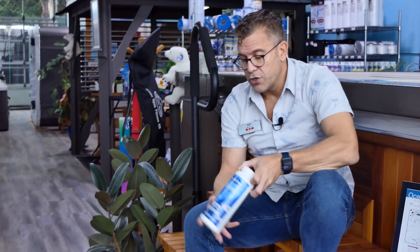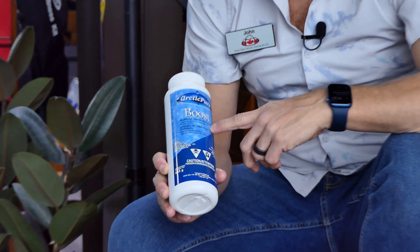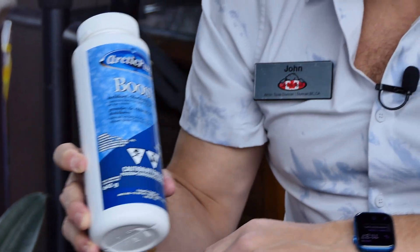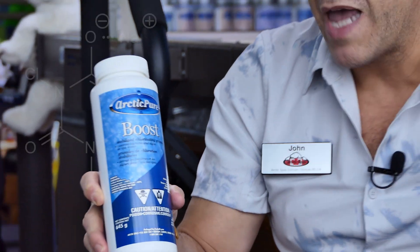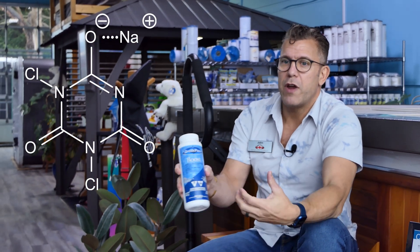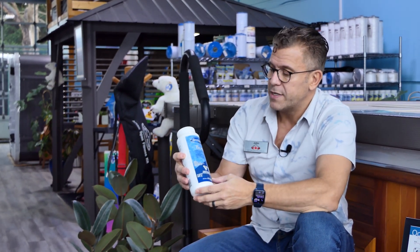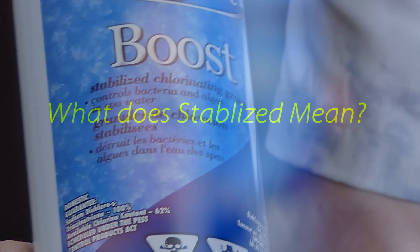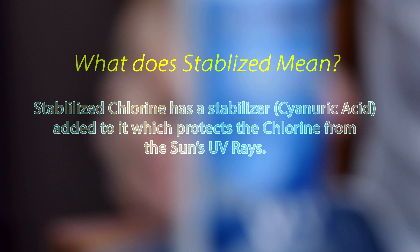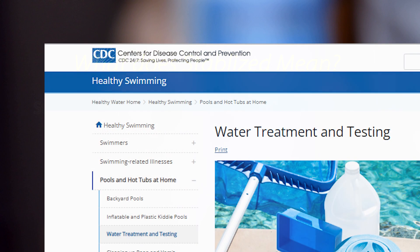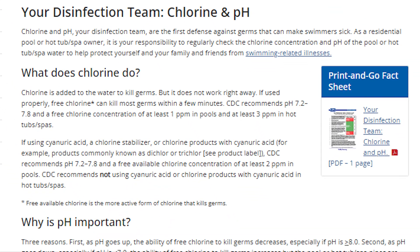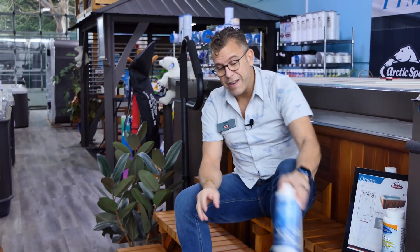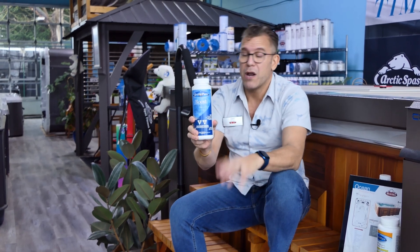The most common granular form of chlorine is sodium dichlor. Sodium dichlor has a pretty complicated chemical formula, but basically when it goes into the water it creates some free chlorine. The key thing to point out is that it is a stabilized chlorine — and the tablets are also labelled stabilized. What does stabilized mean? This is actually a throwback from the pool industry, not the spa industry. The CDC actually recommends not using stabilized chlorine in hot tubs.